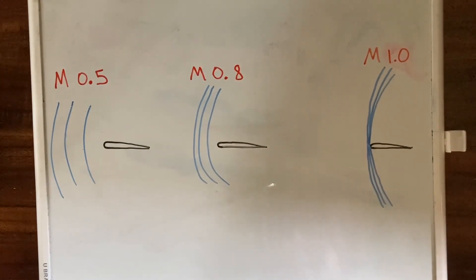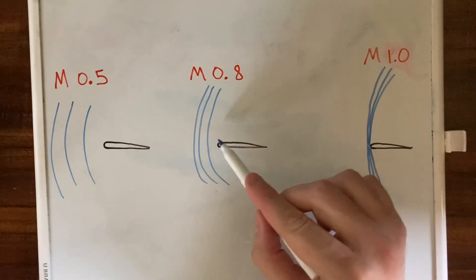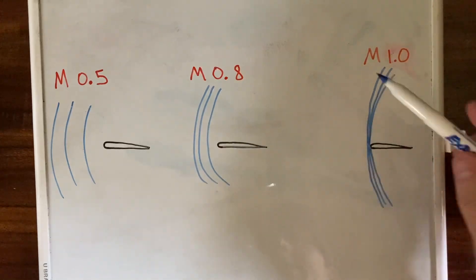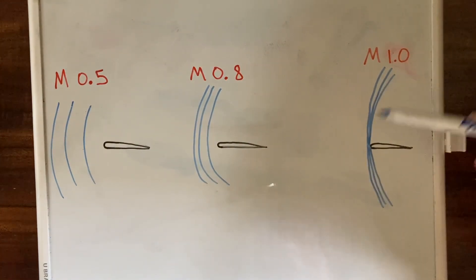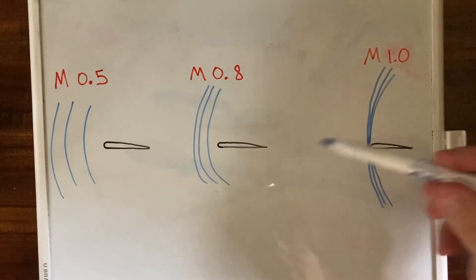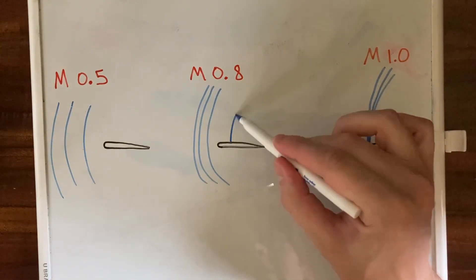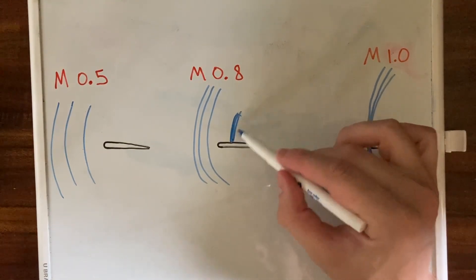So what can happen is at speeds getting towards Mach 1 but still below Mach 1, the accelerating airflow over the top reaches the speed of sound and we get this shock wave here. While it hasn't yet formed completely in front of the aircraft, we get one forming on top of the wing.